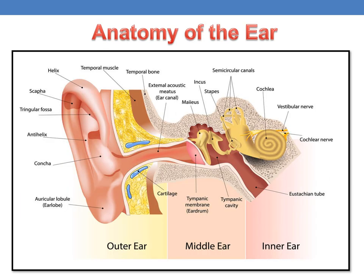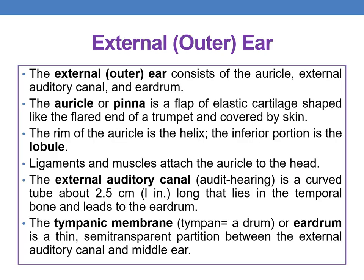Here you can see the overall representation of the entire ear — outer ear, middle ear, and inner ear. In this session we will discuss each region. Starting with the outer ear or external ear, which consists of the auricle, the external auditory canal, and the eardrum.